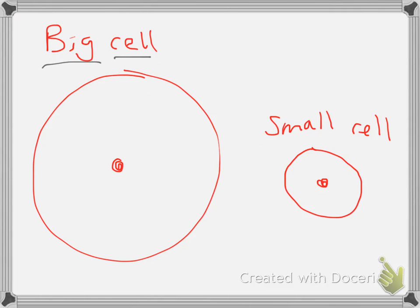Here we have a big cell, and here we have a small cell. Let's say we have something that needs to get to the middle of the big cell and something that needs to get to the middle of the small cell. How long is it going to take to get to the middle of the big cell as compared to the little cell?